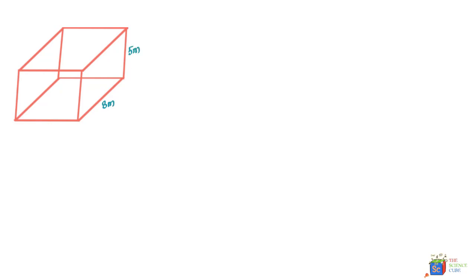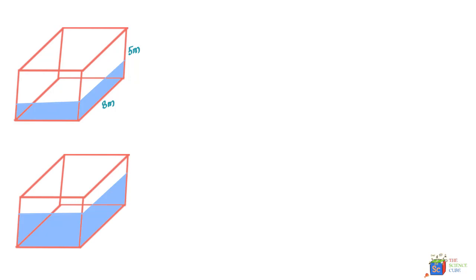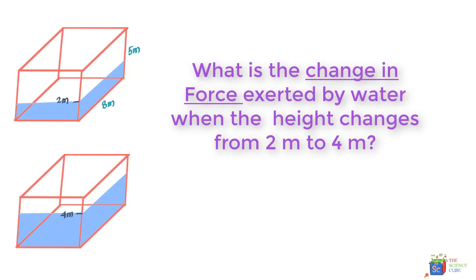Here we have an aquarium with a width of 8 meters and a height of 5 meters. Water is filled to a height of 2 meters first, and then the aquarium is filled with another 2 meters of water so the total height becomes 4 meters. The question is: what is the change in force exerted by the water on the wall when the height changes from 2 meters to 4 meters?